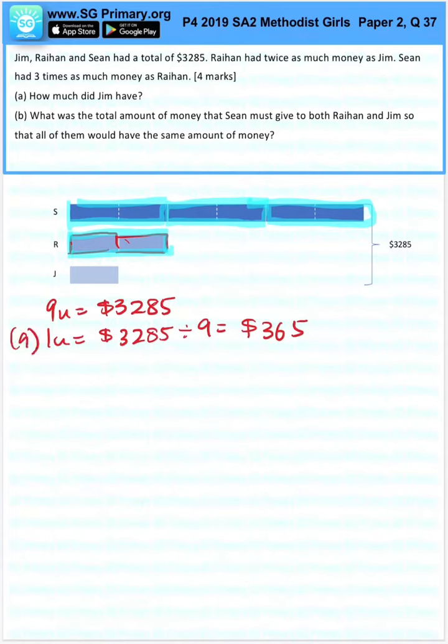Let's move on to B. So the amount that each one of them must have equally is $3,285 divided by 3, which will give me $1,095.